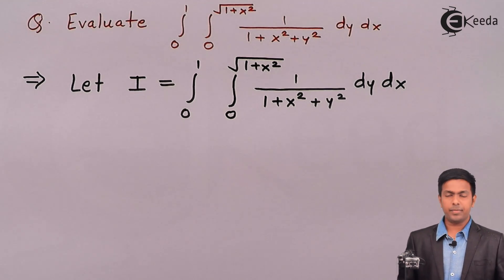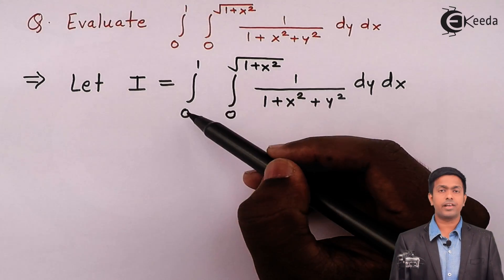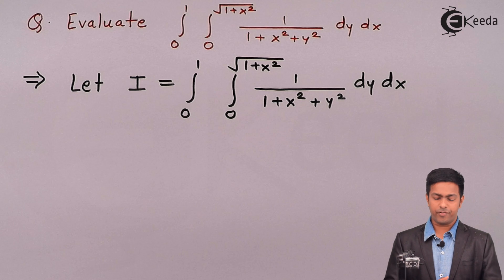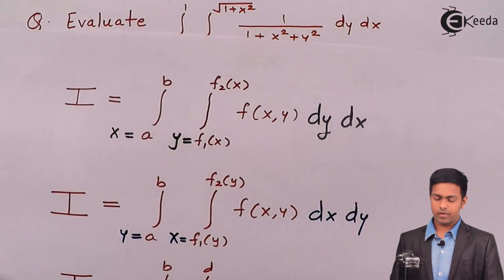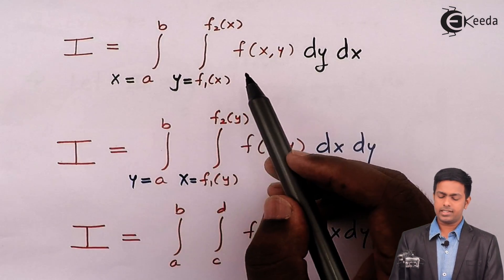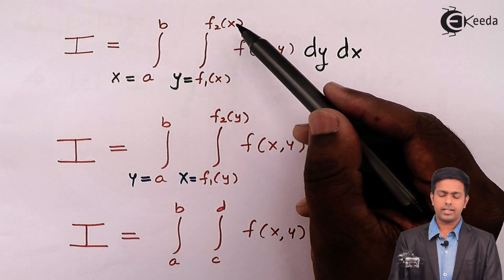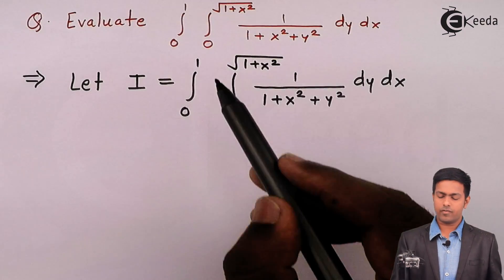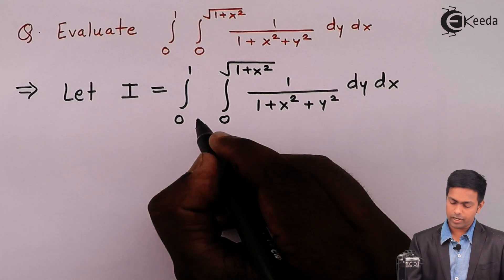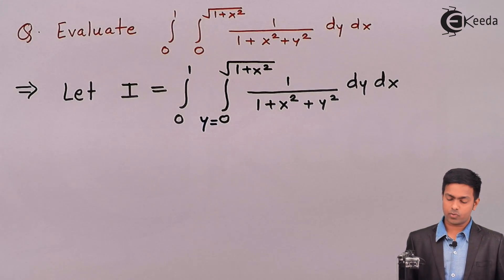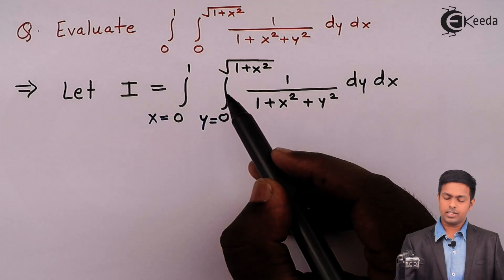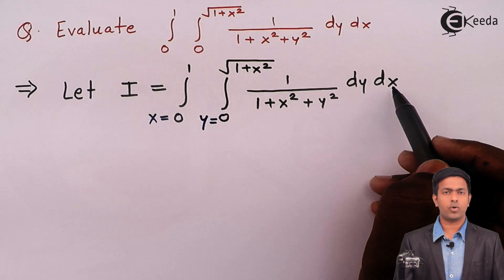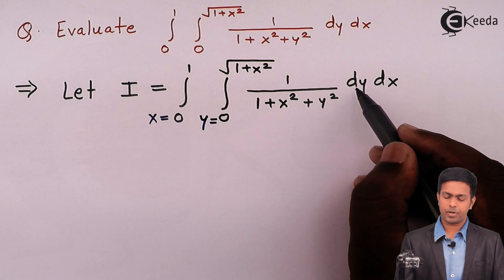Let's see the limits. The limit of one integration is constant whereas the other limit is a function of x. We have seen three cases in the previous video — whenever we have a function of x as a limit, that is the limit for y, and the constant is the value of x. So here y is from 0 to root of 1 plus x square, and the remaining constant is for x. Since we have the y limit, we integrate with respect to y first, then with respect to x.